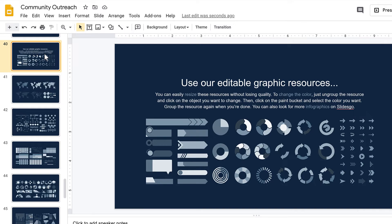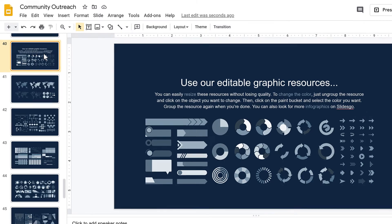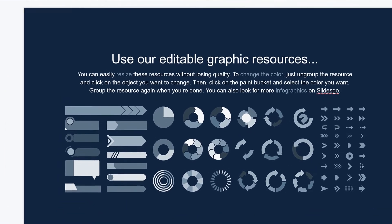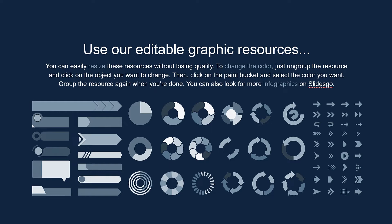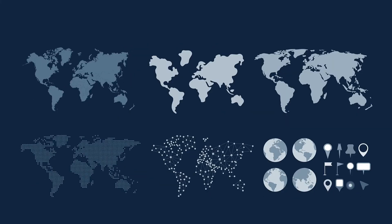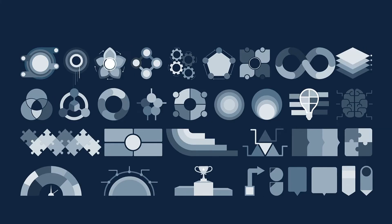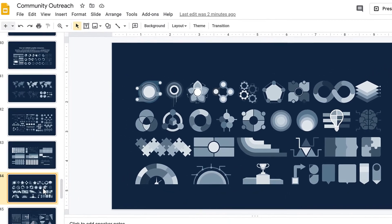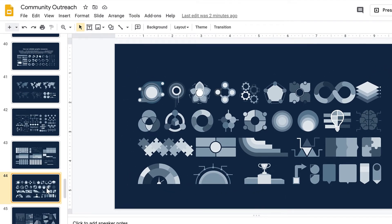Near the bottom of the slides navigation pane, you may find editable resources for your slides. Here you can see graphics, maps, tables, and more. Unlike the alternative resources, these graphics are not part of the theme. Therefore, you may have to change their color or resize them to make them fit the theme better.